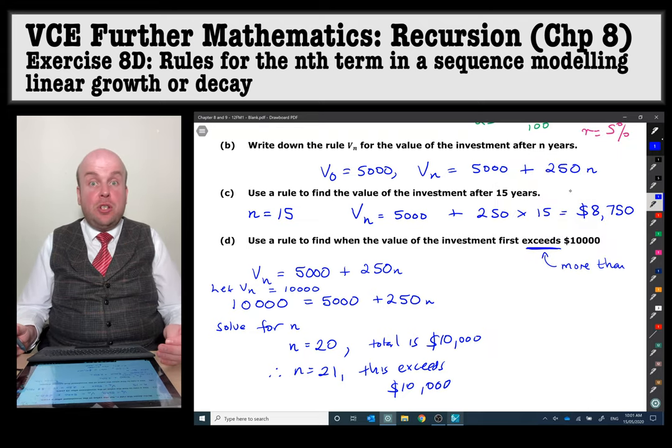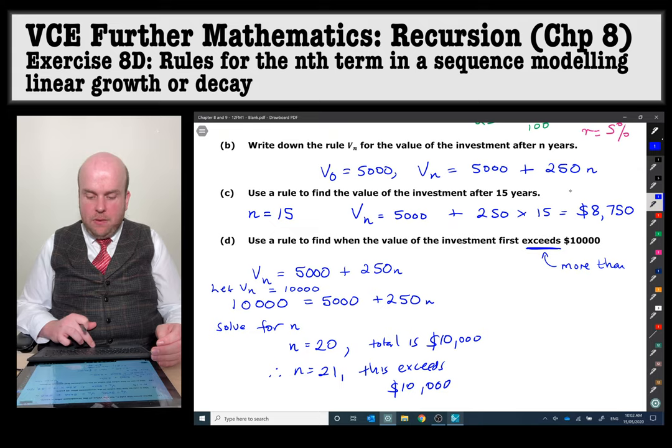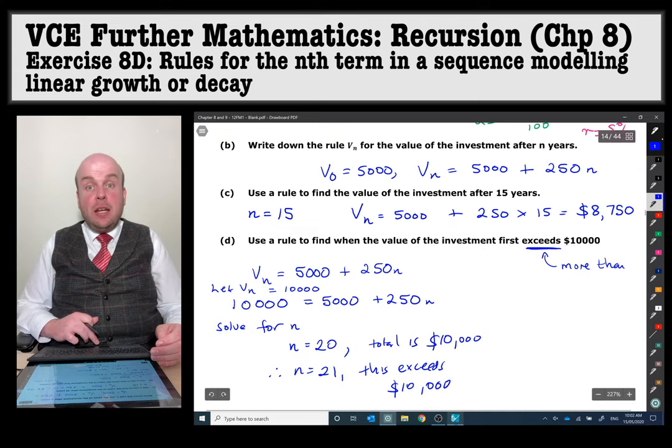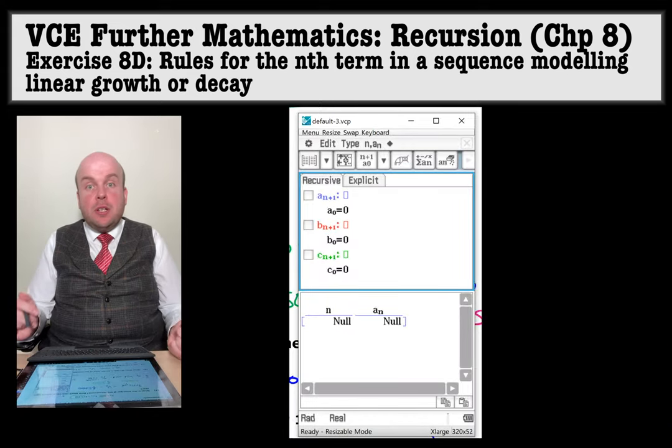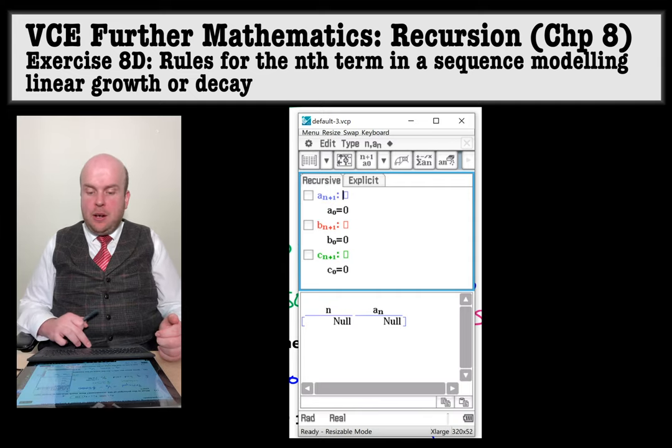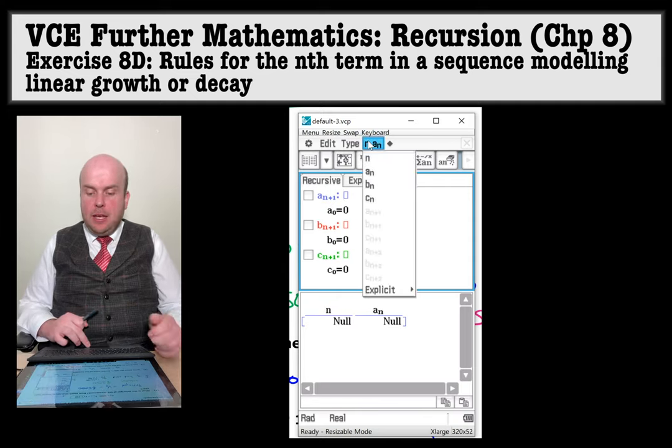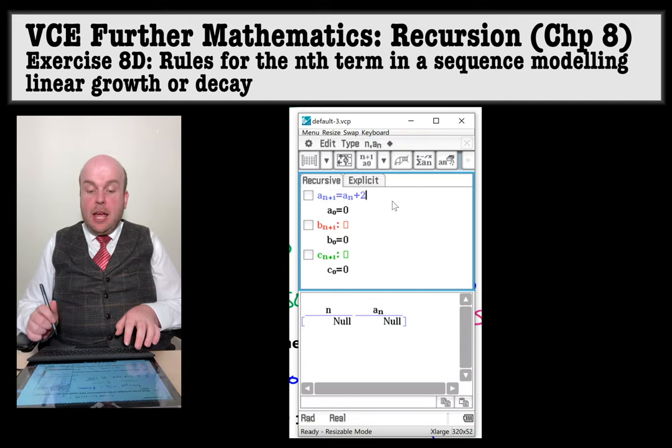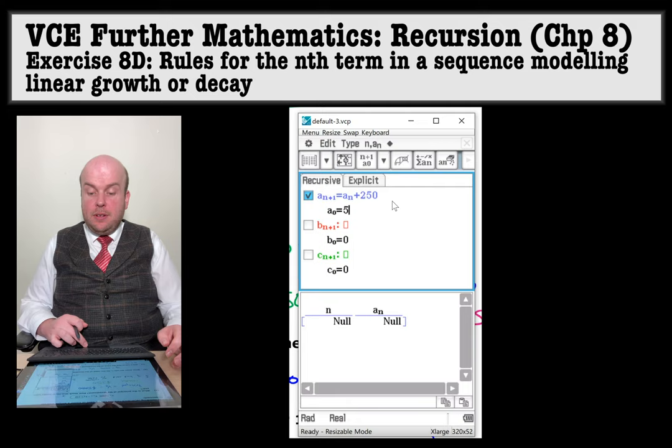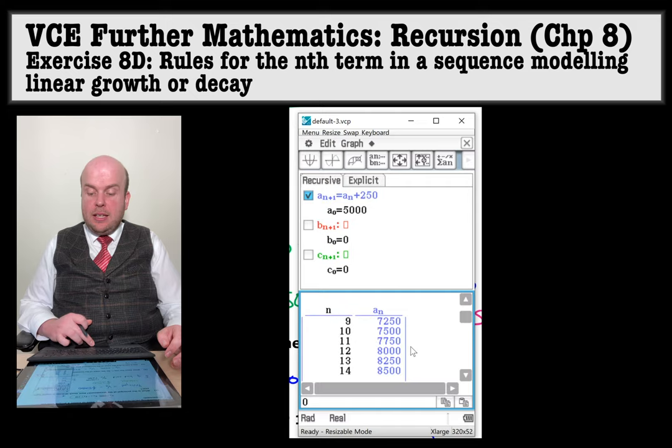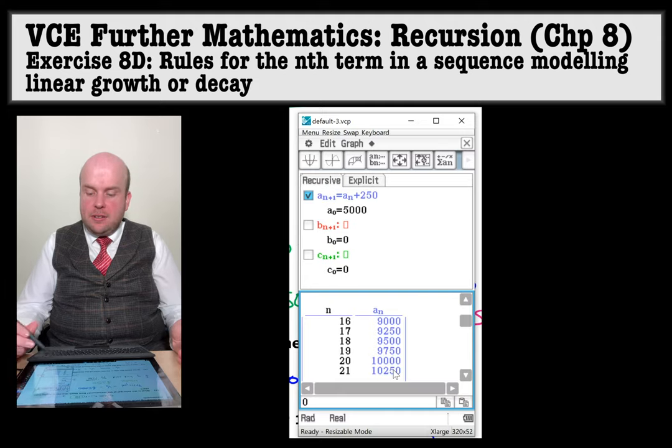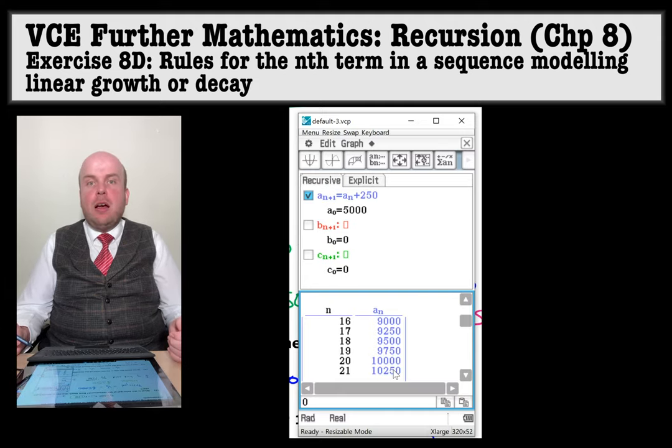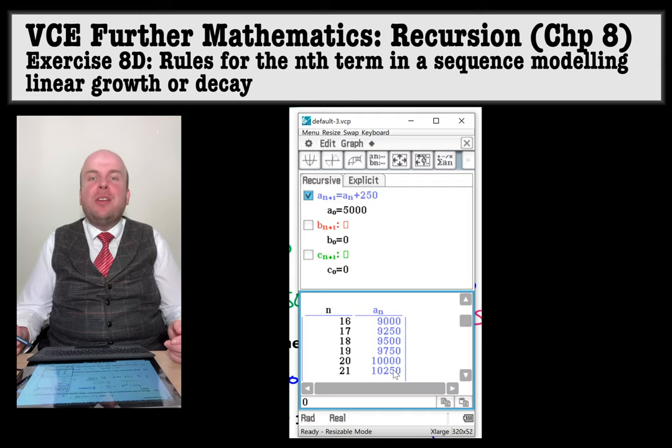Alternatively, you could also use the calculator to show this as a sequence. So if we go to the calculator, we can use the sequences option to get the same answer. For this, to use the sequences option, I would just use the initial recurrence relation. So instead of Vn I'm just going to put An, and I'm going to write plus 250, and then the V0 is 5,000. And then what I do is I just scroll down here until I can see which year first exceeds or is first greater than 10,000. And we can see that it's at the 21st, 21st year.